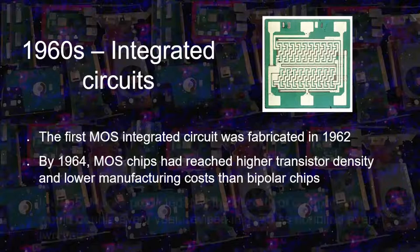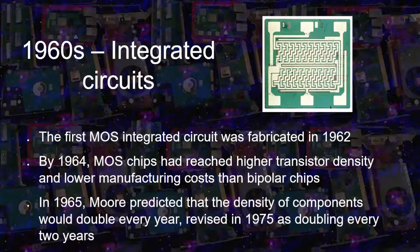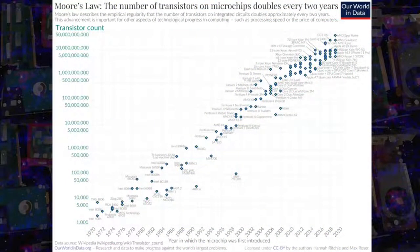In 1965, Gordon Moore made the famous prediction that the density of components in a chip would double every year, which a few years later was revised to double every two years — that is, an exponential growth in the density of integrated circuits. Moore's law is still alive today, but the industry is facing increasing challenges to keep up with it.